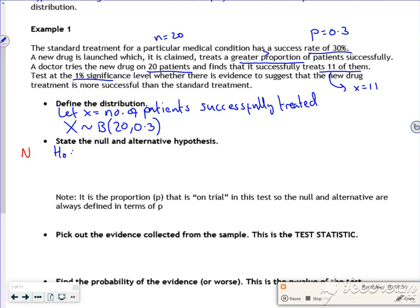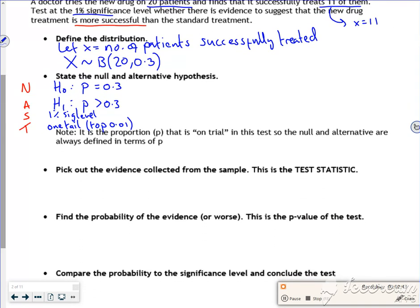So H naught, now this time it's the P value that we're looking at, not the mu. So we're testing P. So we're saying it should stay 0.3. Now the alternative, to see if it's more successful, so I'm saying that actually P is greater than 0.3. Now this example's missing the significance level, so it's a 1% sig level. And the tail, so it's a 1 tail, and it's the top 0.01. So this is exactly the same like I said. So it says notice the proportion that is on trial in this test, so null and alternative are defined in terms of P.